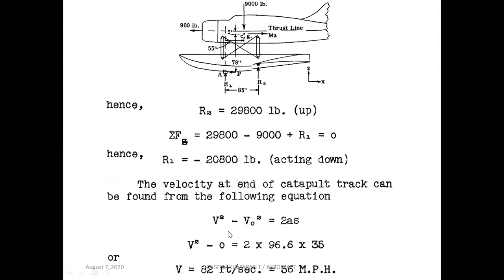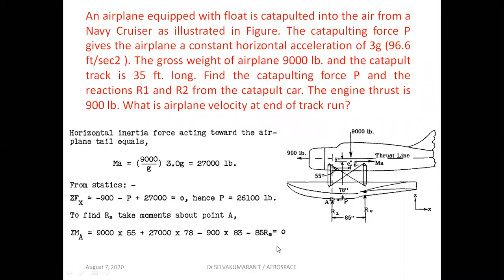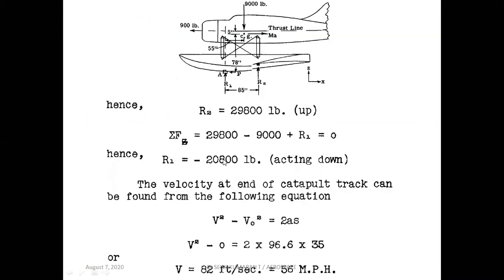To find the velocity at the end of the catapult track, we use V² - U² = 2AS. The initial velocity is 0 (starting from rest), A is the given acceleration, and S is the track distance of 35 feet. From this we calculate V equal to 82 feet per second. So we have calculated the inertia force, P, R2, R1, and the final velocity V.